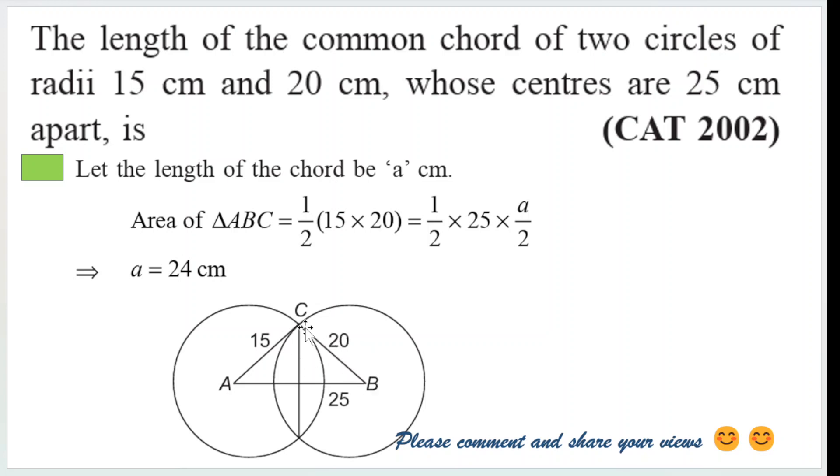So half into 15 into 20 is the area of triangle ABC, because AC and BC are perpendicular. At the same time, half into AB into this part is also the area of the same right angle. AB we also know, and this part,